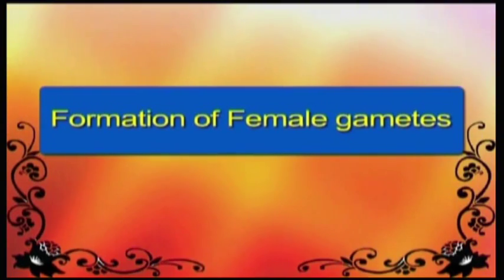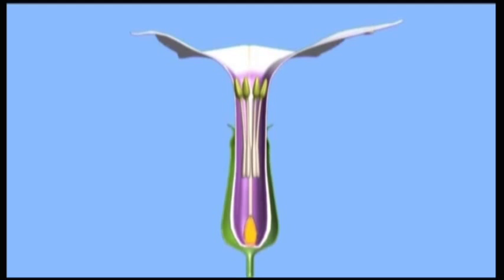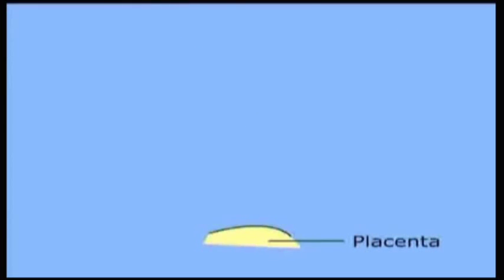Formation of female gametes. The ovule is situated inside the ovary. Ovule develops from cushion-like part of the ovary called the placenta. Ovule is connected to the placenta by a stalk known as funicle.